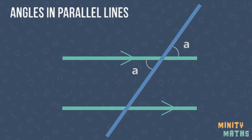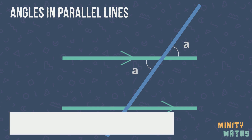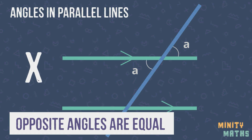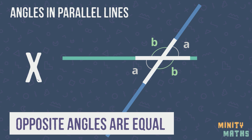Angles that are opposite each other are always equal. Notice that the two angles labelled A are equal, and the two angles labelled B are equal. These are called opposite angles, or more informally, X angles. These angles can also exist without a pair of parallel lines. Here is an example.